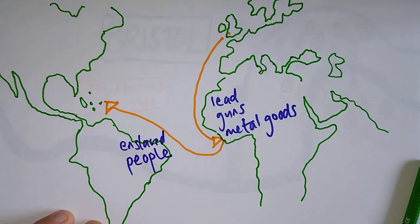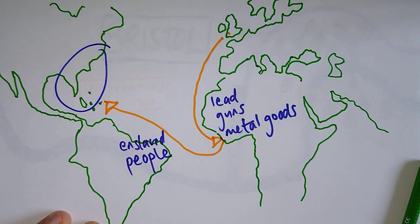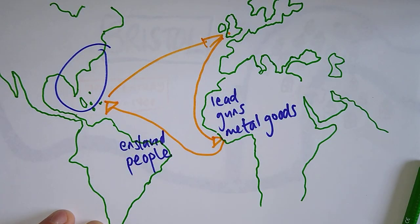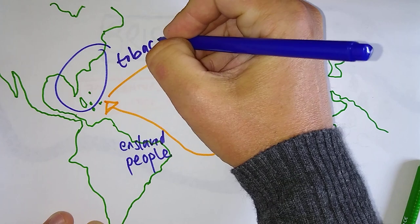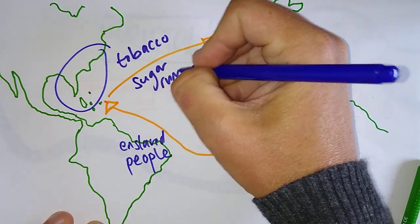And they were taking those enslaved people to work here on plantations. And those people here on the plantations were making goods that were then taken back to Bristol. And those goods were, funnily enough, goods that brought a lot of value. Tobacco, sugar, rum.